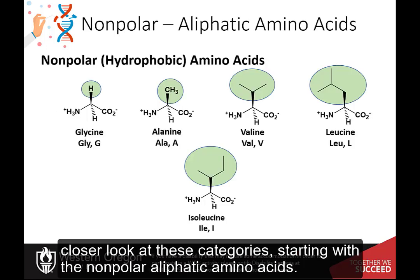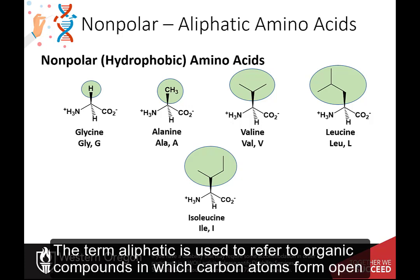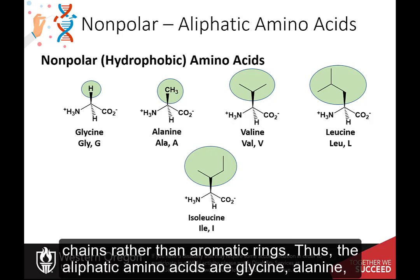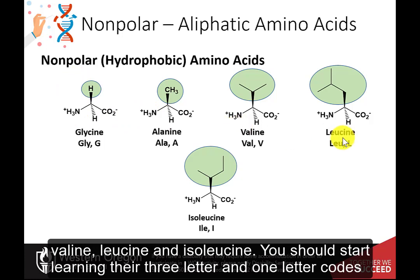Let's take a closer look at these categories, starting with the nonpolar aliphatic amino acids. The term aliphatic is used to refer to organic compounds in which carbon atoms form open chains rather than aromatic rings. Thus, the aliphatic amino acids are glycine, alanine, valine, leucine, and isoleucine.